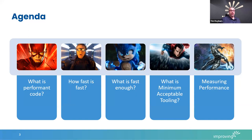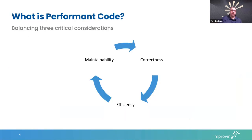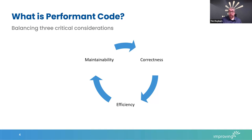Let's talk about what is performance code. When we're dealing with code, we're always trying to balance things. We have to balance these three criteria at all times: we need things that are correct, we need things that are efficient, and we need things that are maintainable. All three go into the overall cost of code. Code that does not do the job correctly is going to have to be touched, and code that has to be touched costs money. So correctness is a key factor.